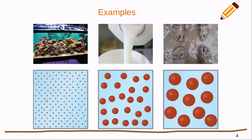Looking at some examples with pictures: when we have individual ions, like in salt water where they're all well separated, we have a true solution. Milk would be an example of a colloid where we have small particles that are all separated, whereas mud is a suspension where those particles are quite large and will eventually settle out.